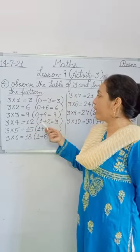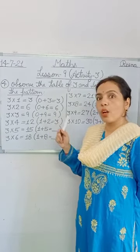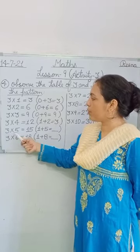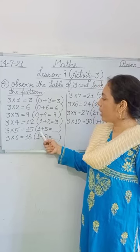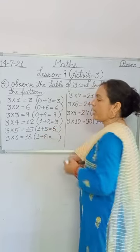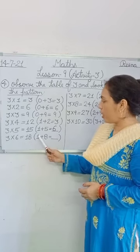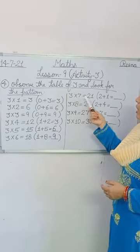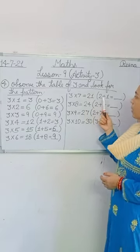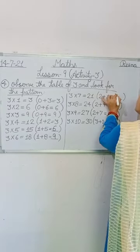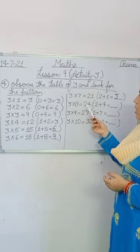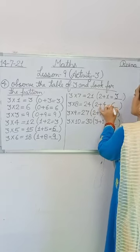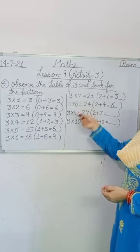Now, only the sum of digits is given here — not place values. In digits: 1 plus 2 equals 3. In the fifth entry: 3 fives are 15, and in bracket 1 plus 5 equals 6. Next: 3 sixes are 18, and in bracket 1 plus 8 equals 9. Then: 3 sevens are 21, and in bracket 2 plus 1 equals 3. Next: 3 eights are 24, and in bracket 2 plus 4 equals 6. The remaining two questions you solve by yourself according to the given pattern.